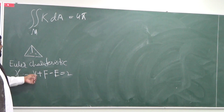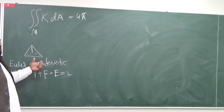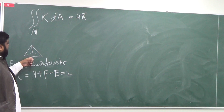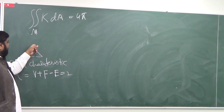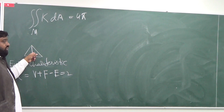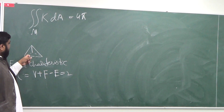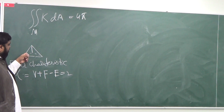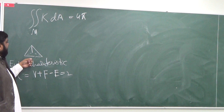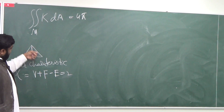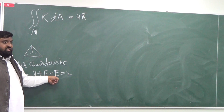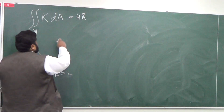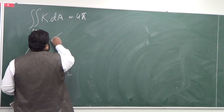Let's count it actually. How many vertices does it have? 1, 2, 3, and 4 — so 4 vertices. How many faces? 4 faces. And how many edges? Edges mean the lines — 6. So you have 4 plus 4 minus 6 equal to 2. And now you can do the same thing with a box.